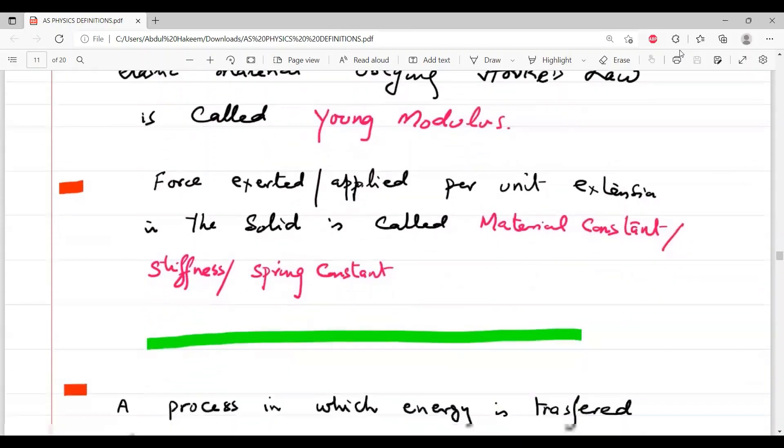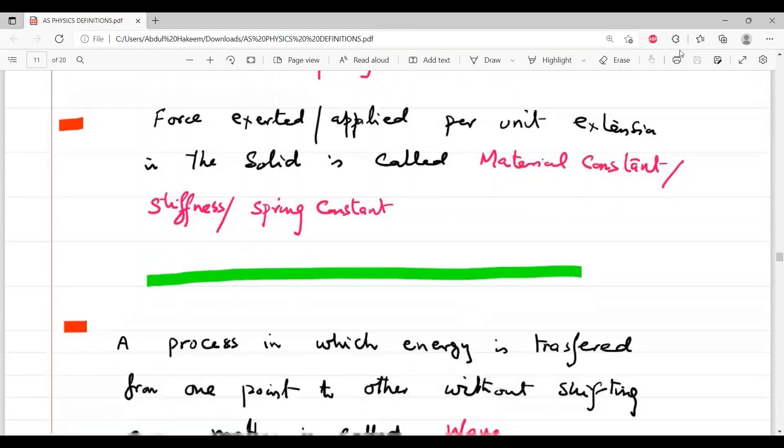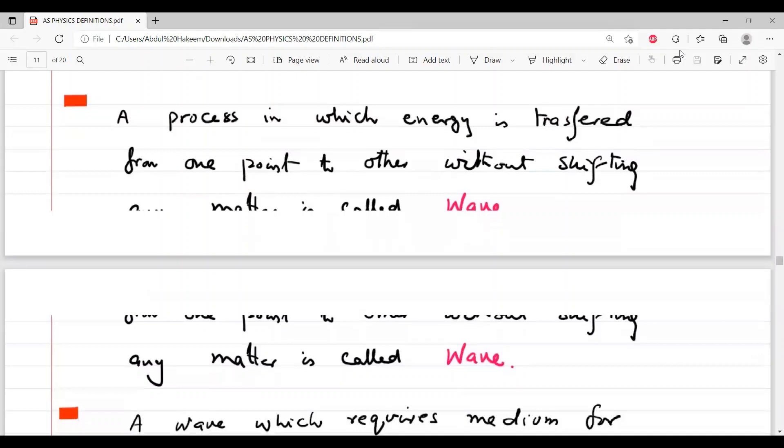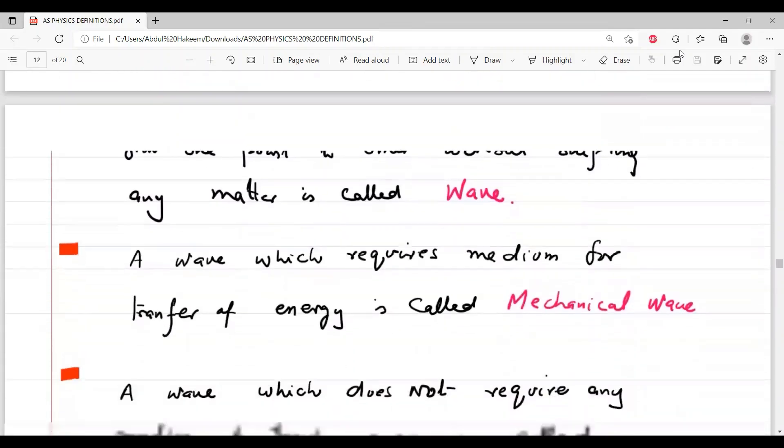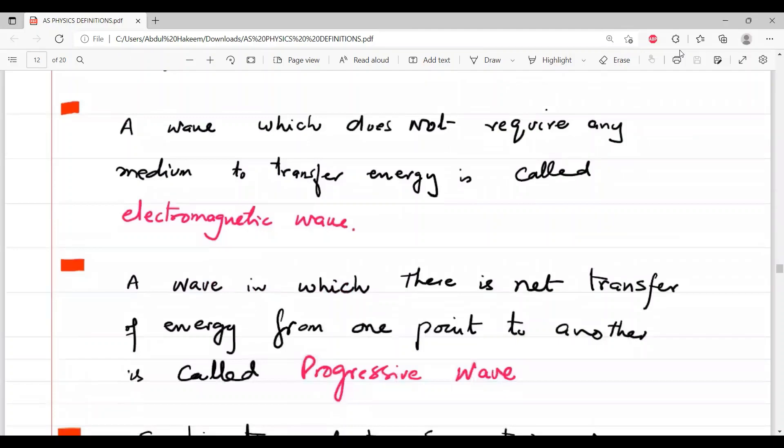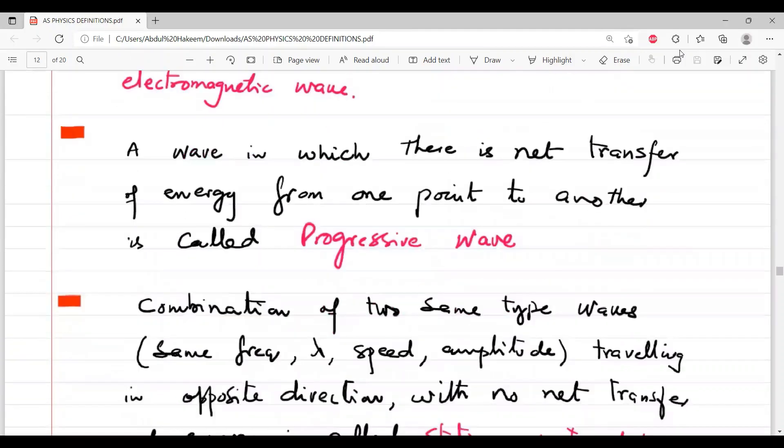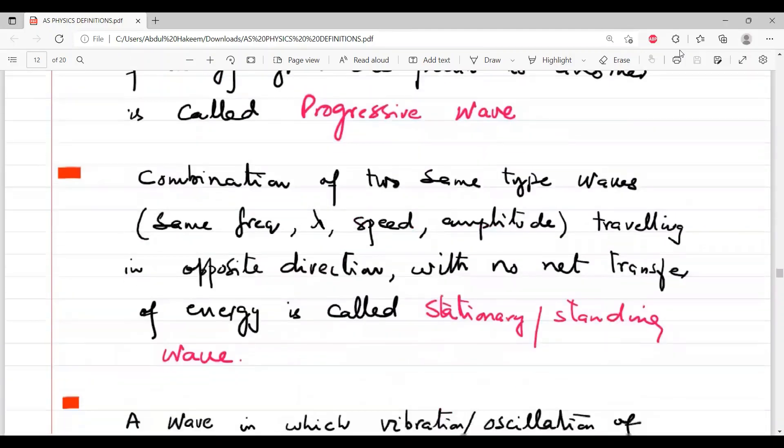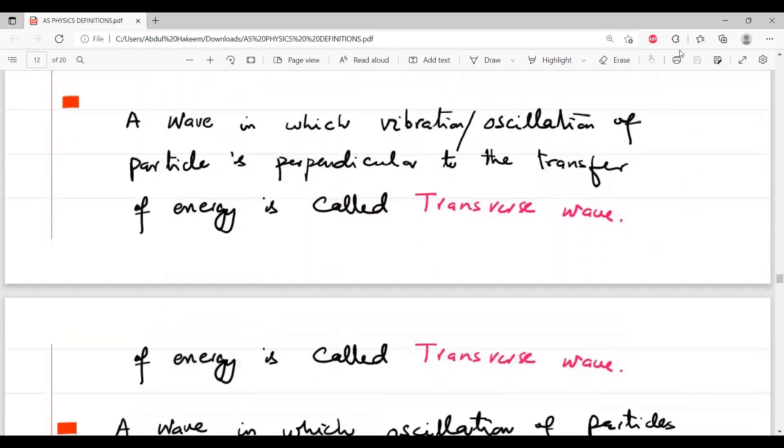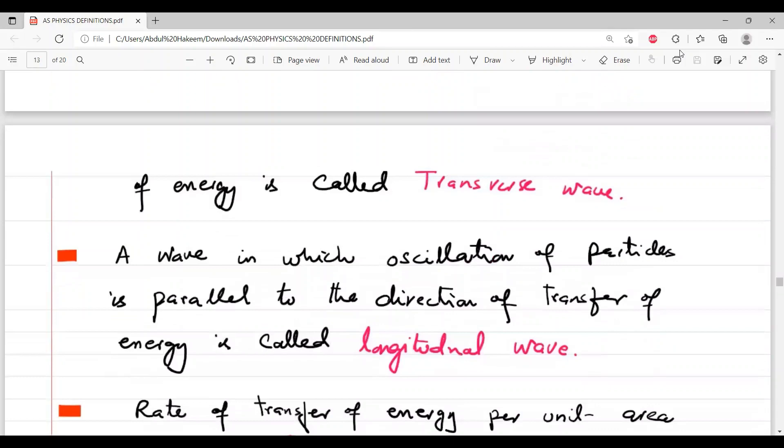Next is Young modulus, material constant means the spring constant, then the definition of wave, mechanical wave, electromagnetic wave, progressive wave, stationary wave, transverse wave, longitudinal wave.